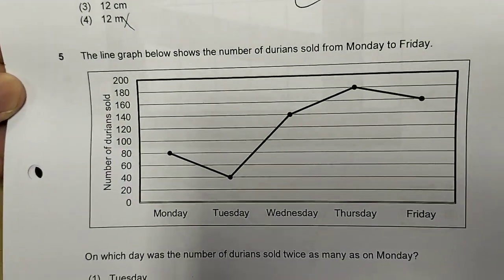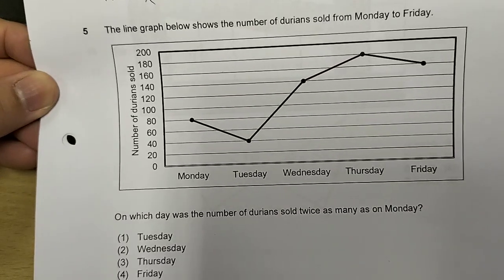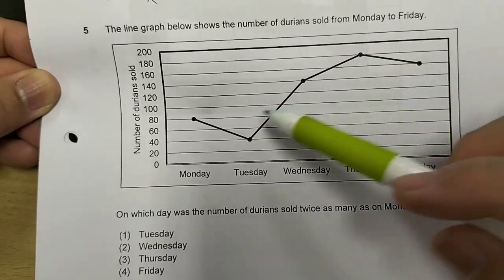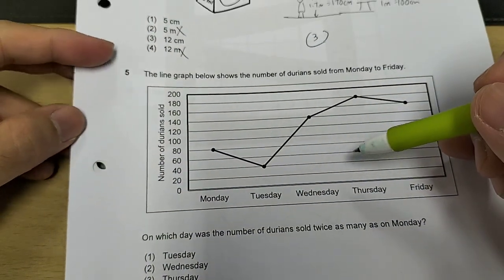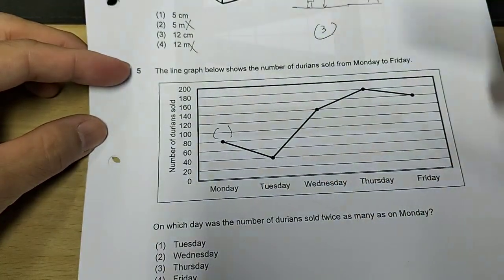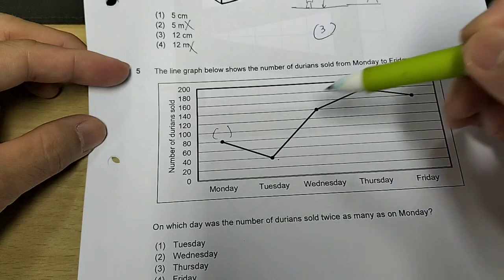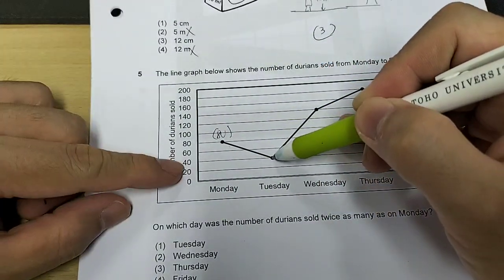Next, line graph shows the number of durian sold from Monday to Friday. Now, you need to look at the numbers on the y-axis. You are required to write down the numbers represented by each stage of this. So Monday, this will be 80. Tuesday, this will be 40.